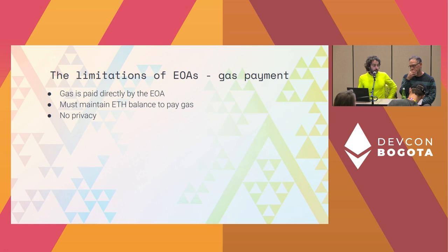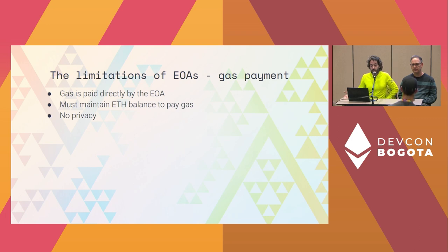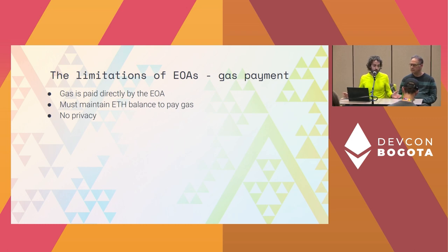The other big limitation of EOAs is gas payment. You're paying gas directly from the EOA, and it has to be ETH, the native token. There are many other ways you might want to pay gas — if you're a fan of dog coins, maybe you want to pay gas in that and don't want to hold ETH.